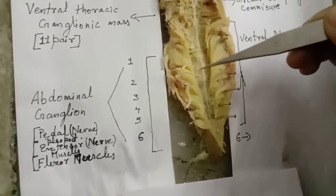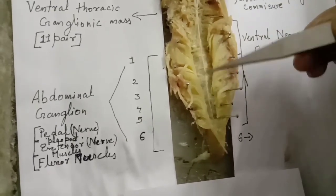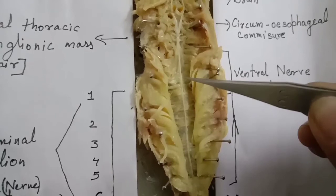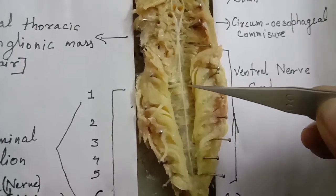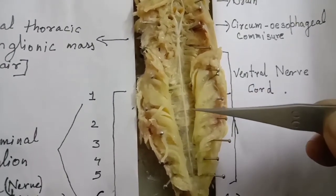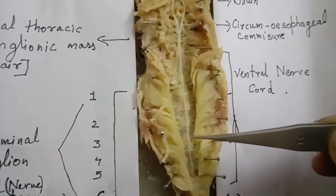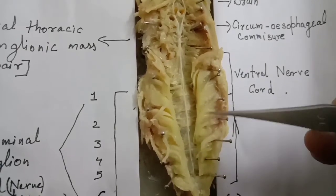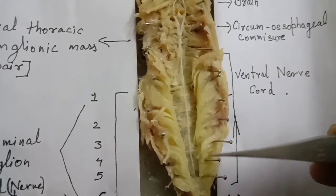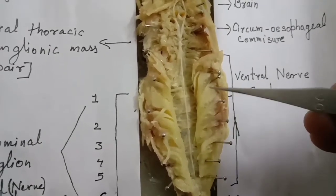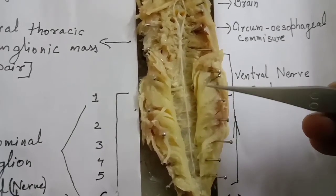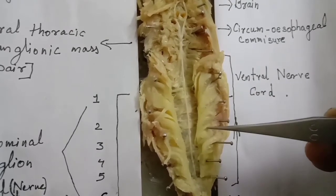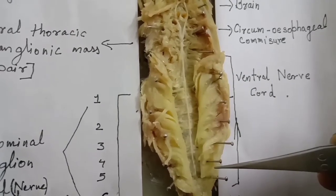Next is the ventral nerve cord. It lies in the midventral line in the abdominal region. There are six abdominal ganglia which give rise to nerves supplying the appendages, muscles, uropore, and hindgut.